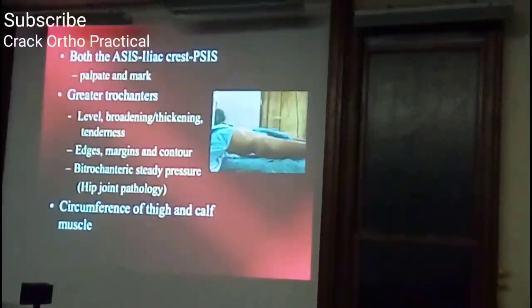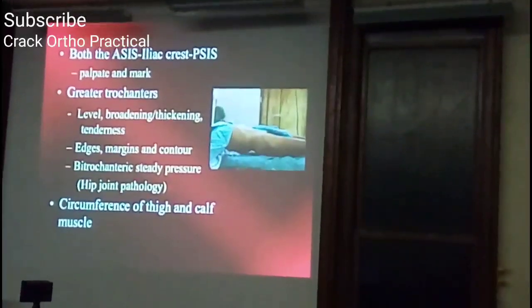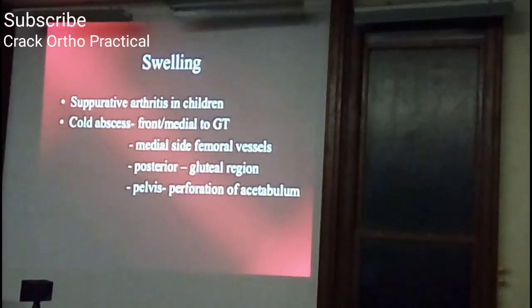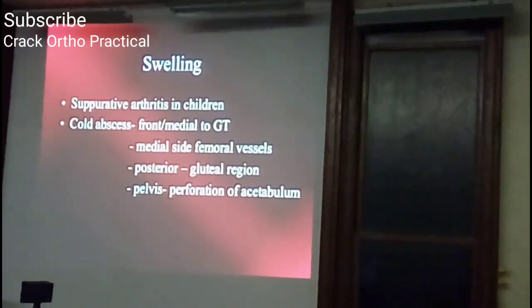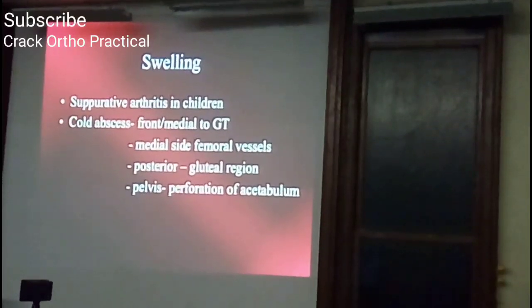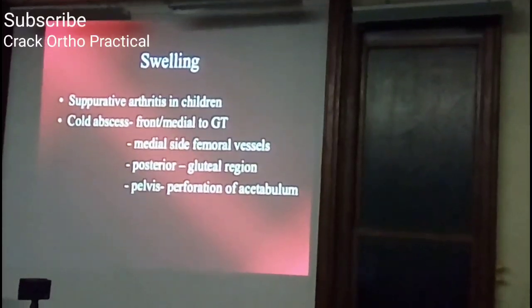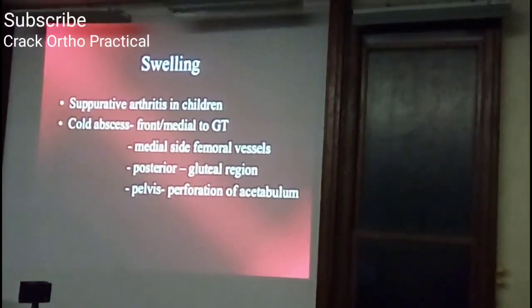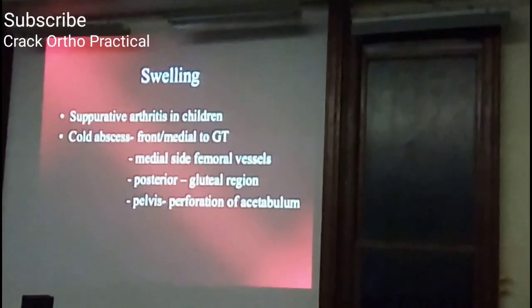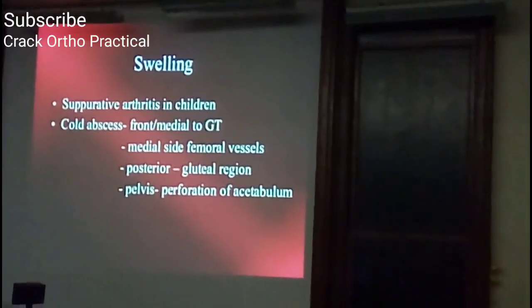Measure the circumference of the thigh and calf for muscle wasting. Swelling can occur in suppurative arthritis of the hip in the femoral triangle, or as cold abscesses from different directions — the front and medial aspect of the greater trochanter, the medial side of the femoral vessels, posteriorly in the gluteal region, in the pelvis, or in the iliac fossa.